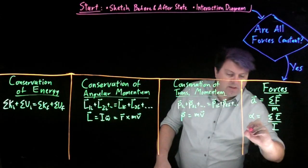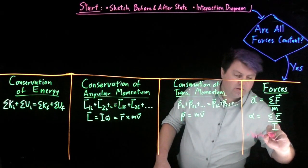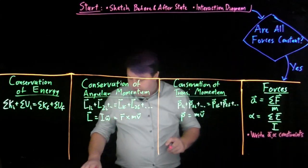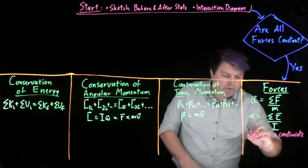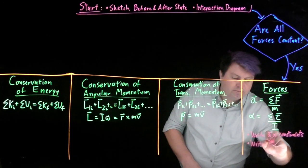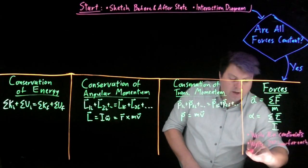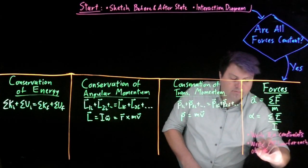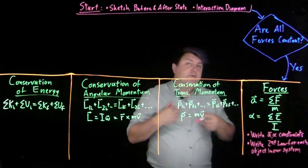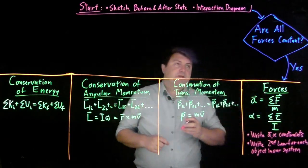We want to find the acceleration constraints. And we have to write a second law for each object in our system. So if we write an interaction diagram in which we have two objects in our system, we would need to write Newton's second law once for each object in the system.